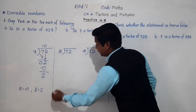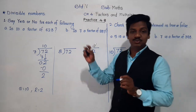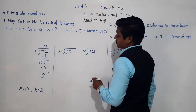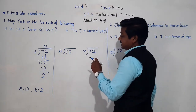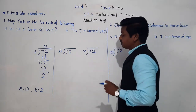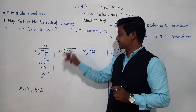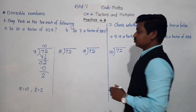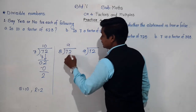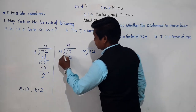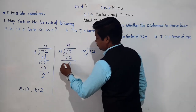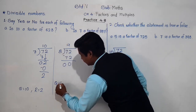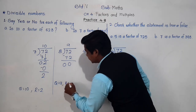Now let's divide 72 by 8 and check what remainder and quotient we get. 8 ones are 8, 16, 24, 32, 40, 48, 56, 64, and 8 nines are 72. So here the quotient is 9 and the remainder is 0.